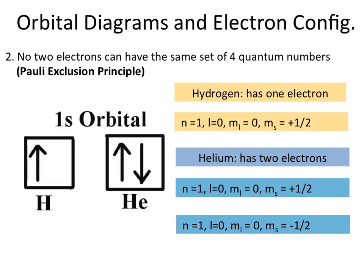Helium has two electrons in the 1s orbital, with the same principal quantum number, l=0, and m_l=0, because the s orbital is still spherical. The first electron corresponds to what we saw with hydrogen. However, the second electron has all the same quantum numbers except m_s, which is different. No two electrons can have the exact same set of four quantum numbers, so one electron is spin up and the second added to that 1s orbital is spin down.